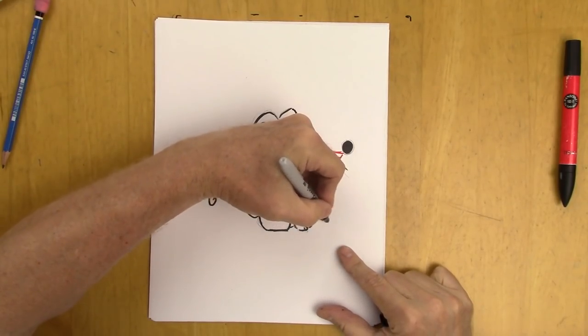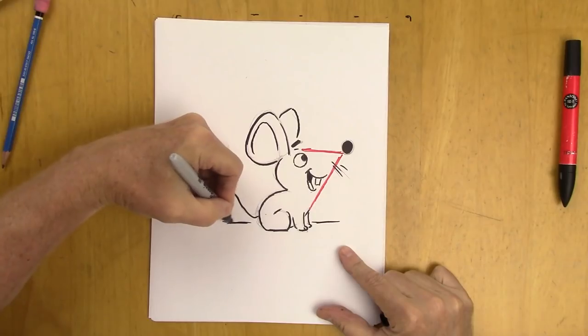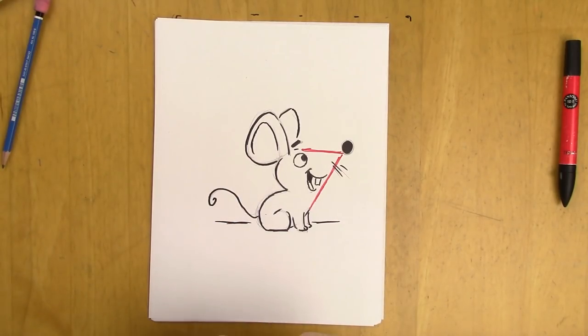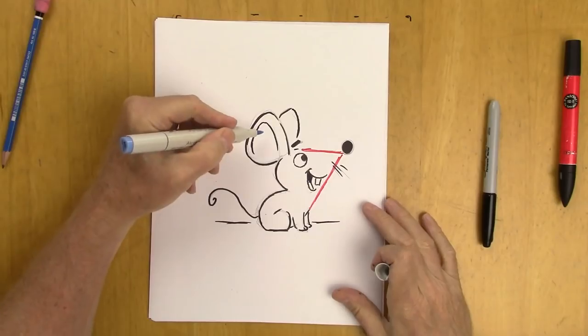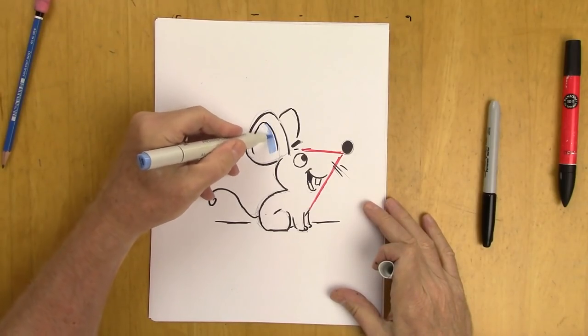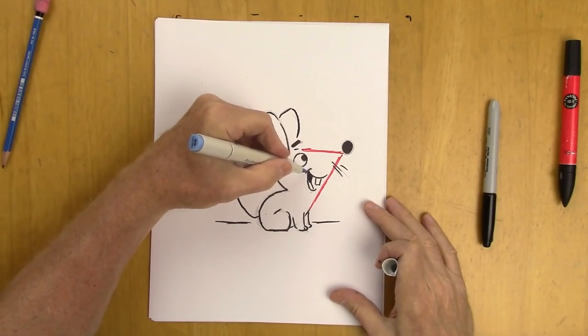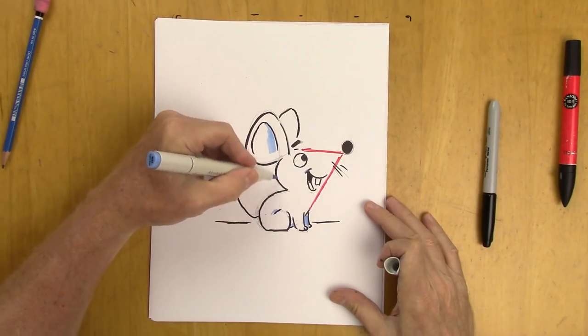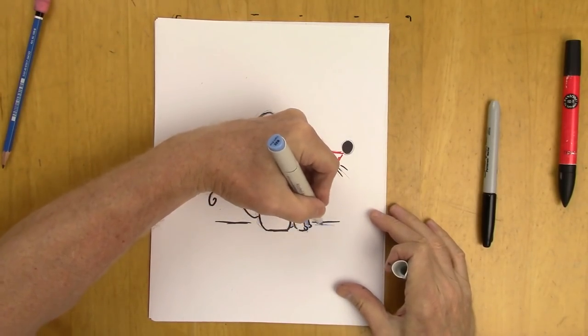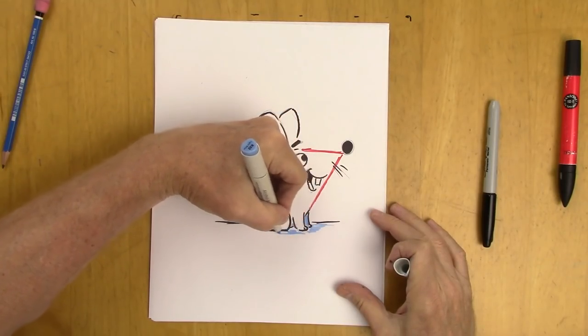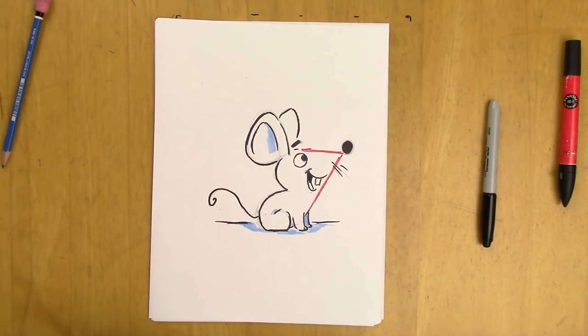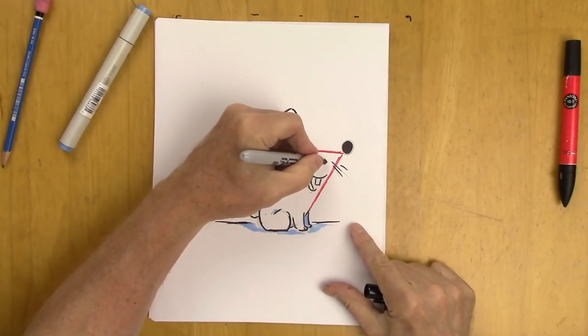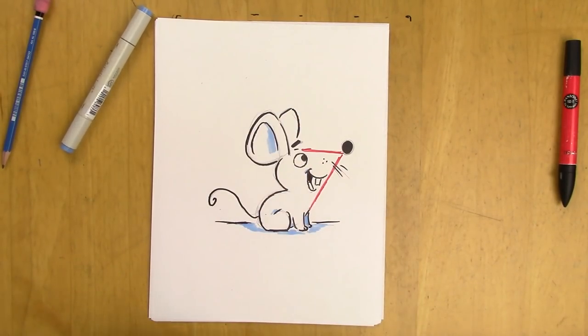Couple of whiskers, and I'll add a few highlights, little shading. One, two, three, and you're done. There's your mouse.